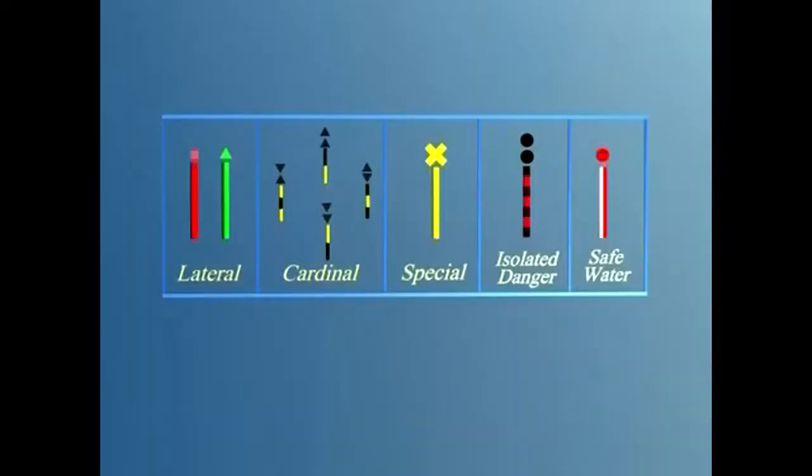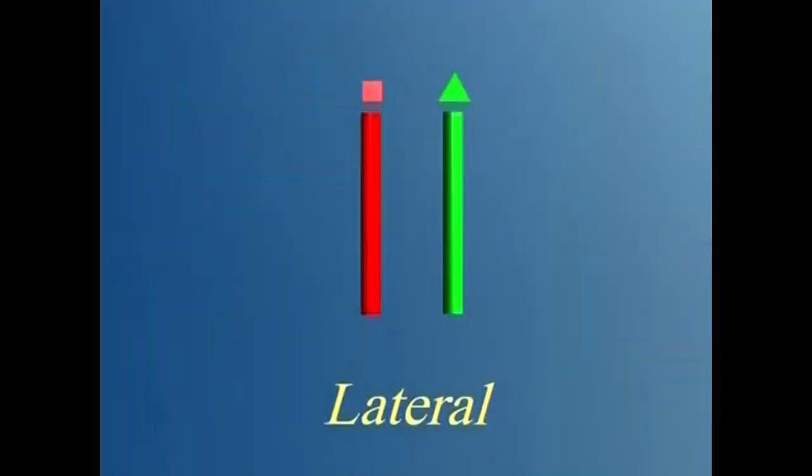Now let us look at these five types of marks. There are two lateral marks, one red, the other green. They can be buoys, piles or lights.